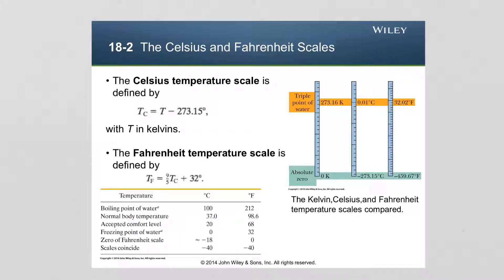The standard scale for measuring temperature in the metric system is the Kelvin scale. On the Kelvin scale, the lowest possible temperature that can exist is called absolute zero, corresponding to zero Kelvin. That would be the temperature of an object when all of the thermal energy it contains is removed from it and no more energy is left.